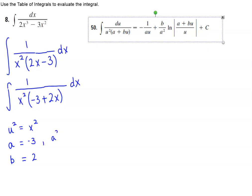We know that a squared is going to be negative 3 squared. And we also know that u would equal x, because if we took the square root of both sides, we know that u is equal to x.